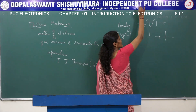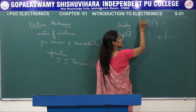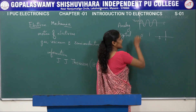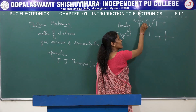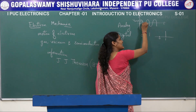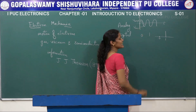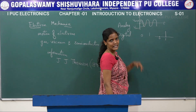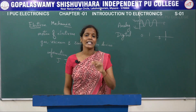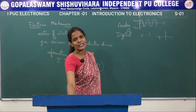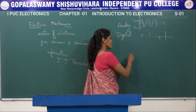The voltage starts from zero, increases slowly, reaches a maximum point V-max, then decreases back to zero, then continues decreasing to a least maximum point V-minimum, and from V-minimum it starts increasing again. So analog electronics deals with continuously varying signals. Digital electronics deals with signals of only two states — zero and one.